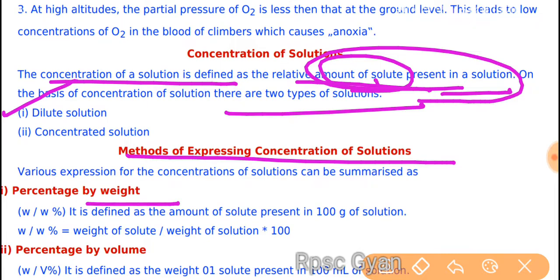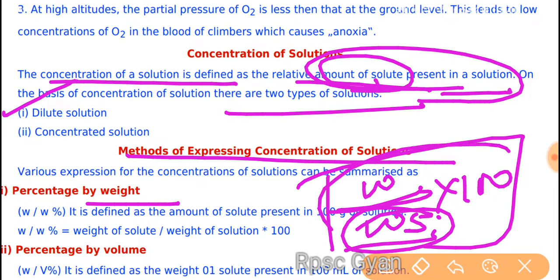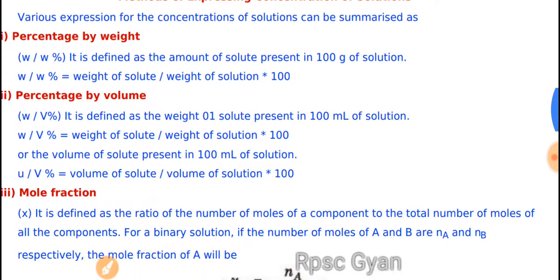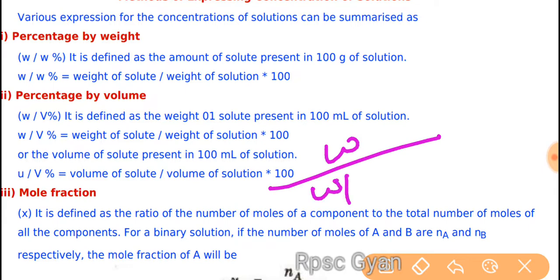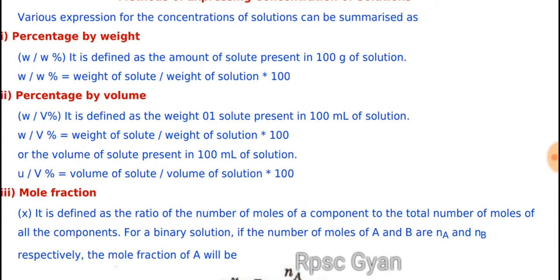This is percentage by weight: weight of solute upon the total weight of solution into 100. Or we can define for 100 ml solution: volume of solute present in the total volume of solution into 100 — that is percentage by volume.